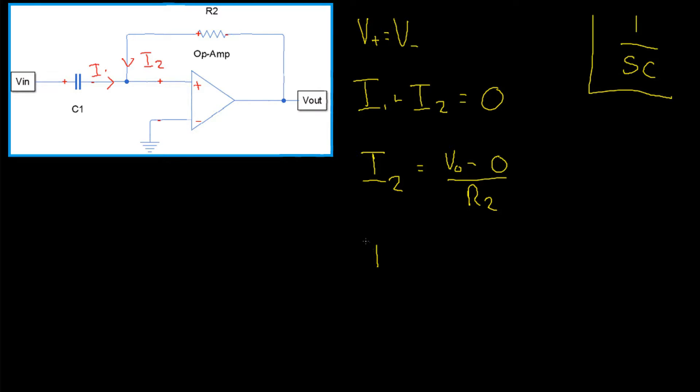So, for I1, we have V in minus the voltage of that node, which is 0, divided by the resistance of the capacitor, which is 1 on SC1. Now, when dividing by a fraction, that's the same as inverting the fraction and multiplying by it. We can remove the 1 on SC1 and then simply have VI SC1.